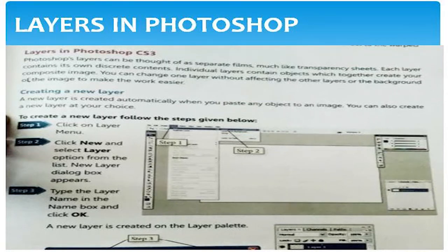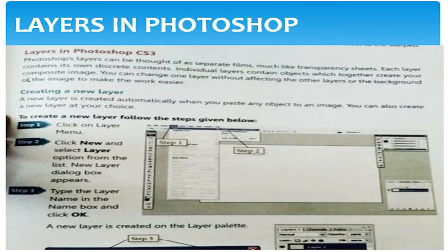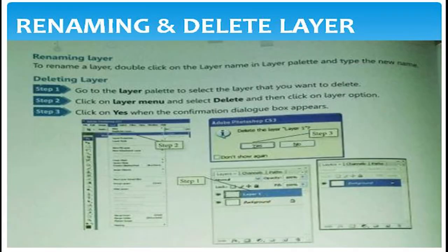Next topic is layers in Photoshop. Photoshop layers can be thought of as separate transparent sheets, much like transparency sheets. Each layer contains its own discrete contents. Individual layers contain objects which together create your composite — the final image. You can change one layer without affecting the other layers or the background. To create a new layer, click on the layer menu, click new layer, and select the layer option. A new layer box appears — type the layer name and click OK.